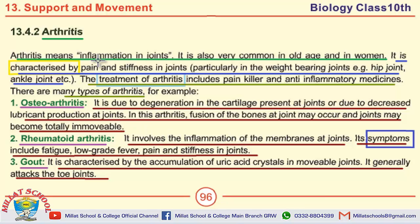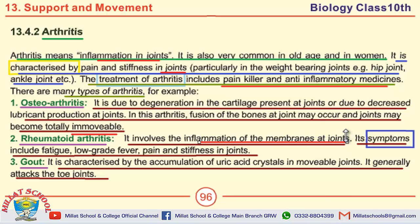Moving towards the MCQs on arthritis: arthritis means inflammation in joints. The first MCQ is taken from the definition of arthritis — it is characterized by pain and stiffness in joints. The treatment of arthritis includes pain killers and anti-inflammatory medicines. There are three major types of arthritis. The joints may totally become immovable in osteoarthritis. Rheumatoid arthritis involves inflammation of membranes at joints. Gout generally attacks the toe joints.